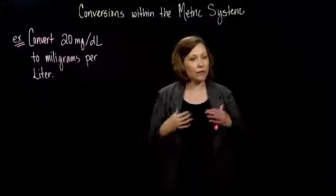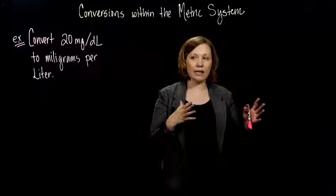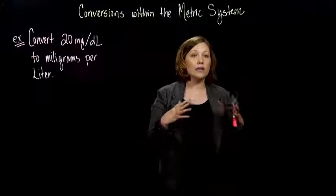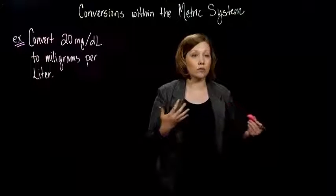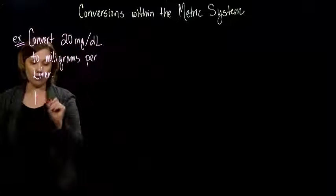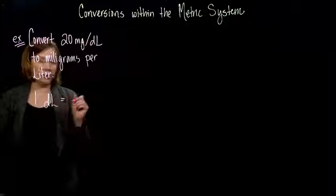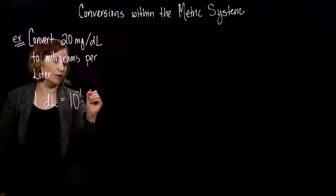So, the first thing you do, whip out your little chart again, look at how much a deciliter is compared to liters. So, if you look at your chart, you'll see you have 1 deciliter is equal to 10 to the minus 1 liters.